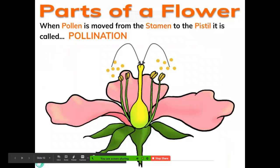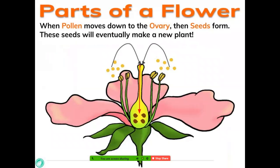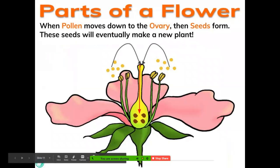When pollen is moved from the stamen to the pistil, it is called pollination. When it is moved from those outside pieces to the middle inside of the pistil, that's called pollination. When pollen moves down to the ovary, then seeds form. These seeds will eventually make a new plant. So when these little pieces of pollen come into the pistil and down into the ovary, it creates a seed, which is what creates a new plant.